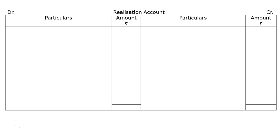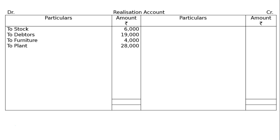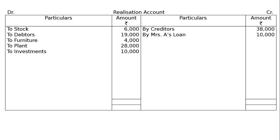First of all, draw the Realization Account and transfer all assets excluding bank and profit and loss account, as these two are not sellable assets. Stock is Rs.6,000, Debtors Rs.19,000, Furniture Rs.4,000, Plant Rs.28,000, Investments Rs.10,000. Also bring in Creditors Rs.38,000 and Mrs. A's Loan being an outsider loan Rs.10,000. B's Loan, being a partner's loan, will be shown in the bank account's credit side.